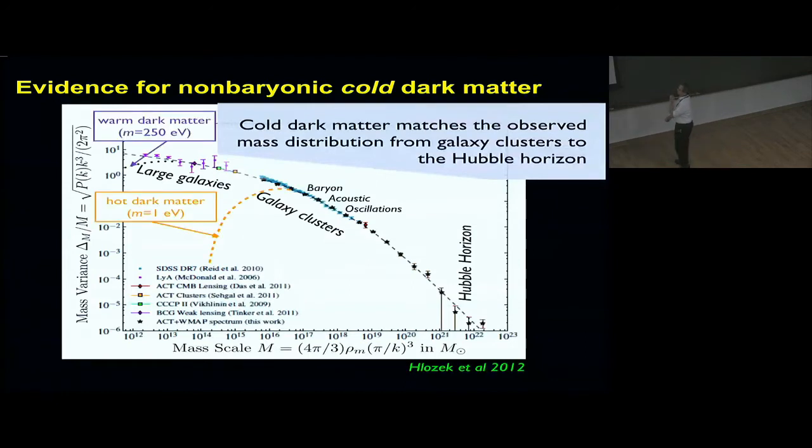The cold dark matter distribution matches the observed mass distribution from galaxy clusters up to the Hubble horizon, from large galaxies to the Hubble horizon. If we add a little hot dark matter, if we had only hot dark matter, like a large neutrino of one electron volt, then this spectrum would show a cutoff at the low scales. This is clearly incompatible with the observations.